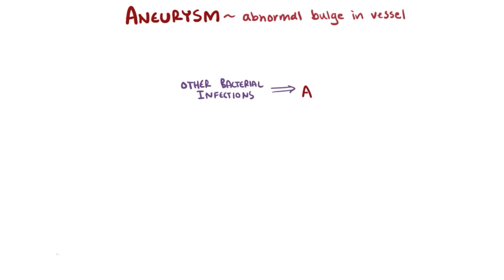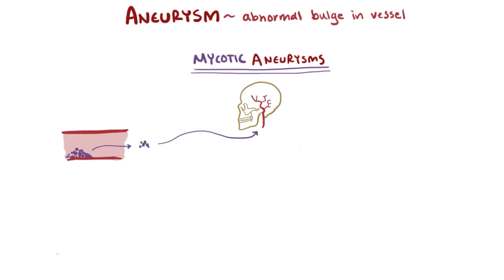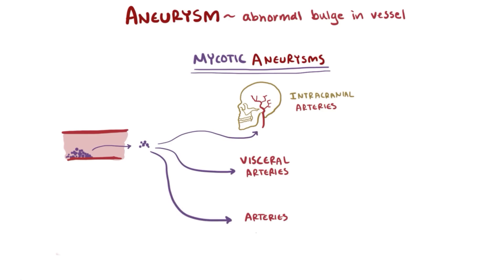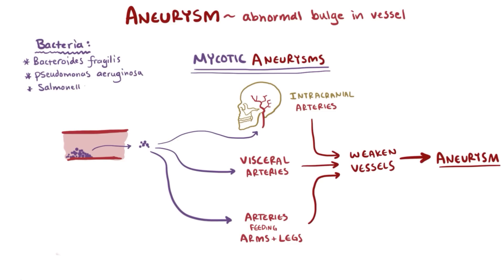Other bacterial infections can also cause aneurysms, which we label as mycotic aneurysms. Bacteria from an infection elsewhere in the body can break off and travel in the blood, usually getting stuck in the intracranial arteries, visceral arteries, or arteries feeding the arms and legs, where they enter and weaken the blood vessel walls. Common bacteria that cause mycotic aneurysms include Bacteroides fragilis, Pseudomonas aeruginosa, and Salmonella species. Mycotic aneurysms are also a complication of infective endocarditis, and infections from fungi such as Aspergillus, Candida, and Mucor are also a common cause.